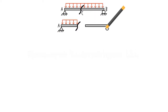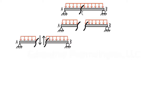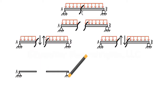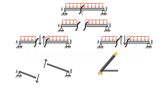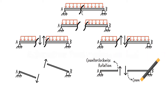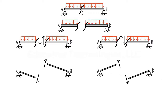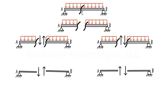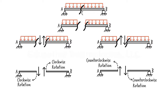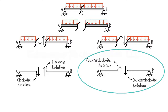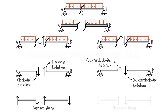Consider a simple beam. If we cut it, say at point C, we need to show the internal shear force and bending moment at the cut point. The shear force has to be shown as a pair of vertical forces acting in opposite directions, so the pair has to be drawn either like this or like this. In the first scenario, the shear force tends to rotate the beam segments in the clockwise direction. In the second scenario, the beam segments want to rotate in the counterclockwise direction. By convention, the shear force direction that tends to cause a clockwise rotation is considered positive. If the shear force tends to cause a counterclockwise rotation, we call it a negative shear. Therefore, this is a positive shear and this is a negative shear.